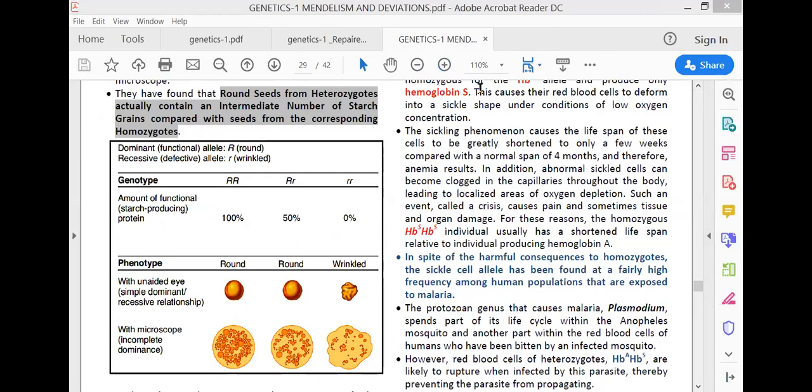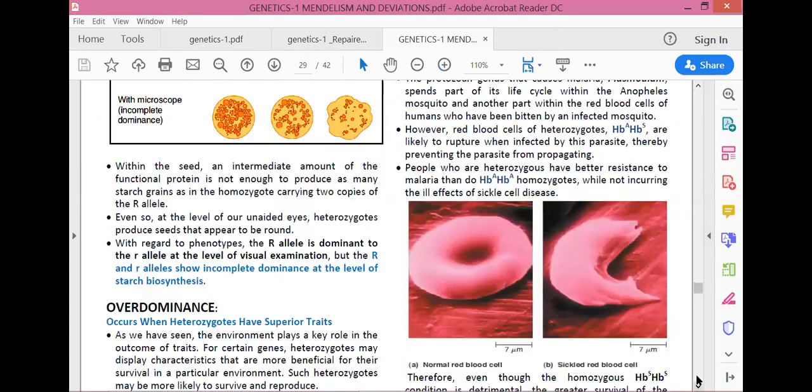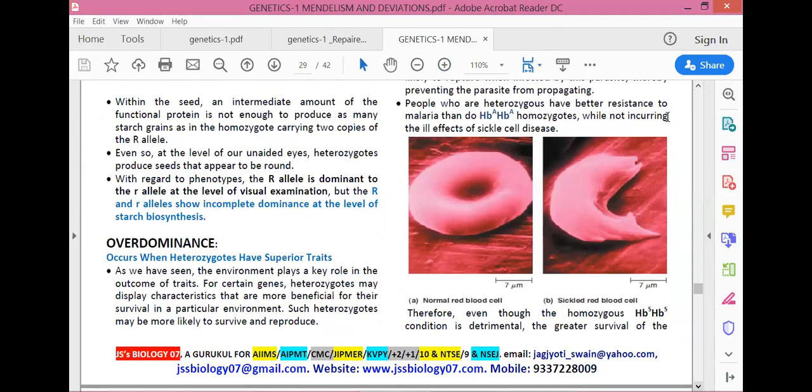Now we will go back to our board and discuss the second allelic deviation, number two and three. These are multiple allelism and co-dominance. Actually, these two are seen together. We will write their definitions.